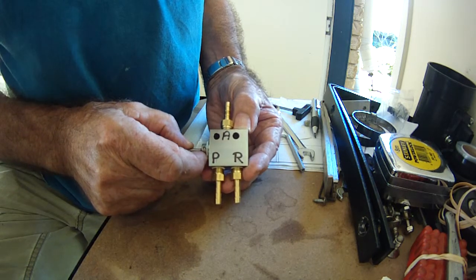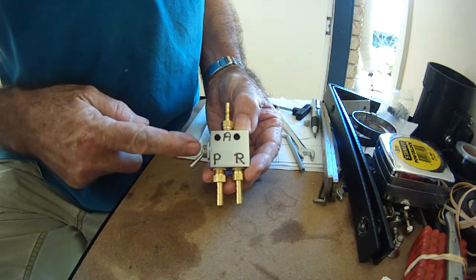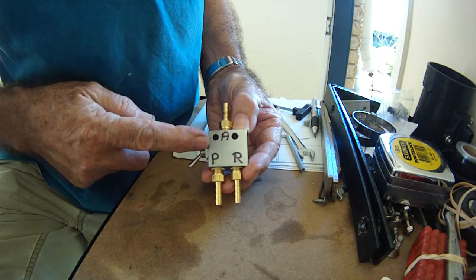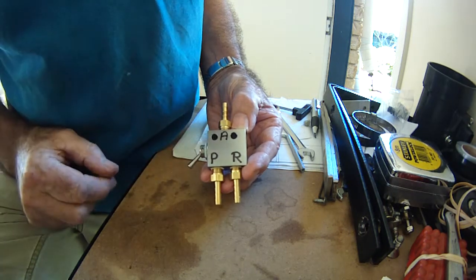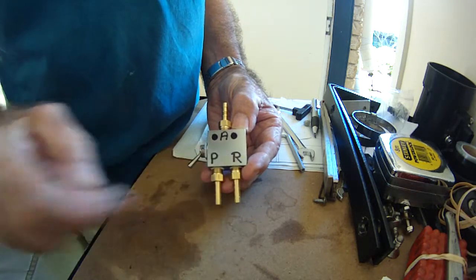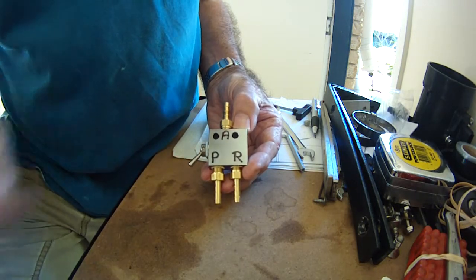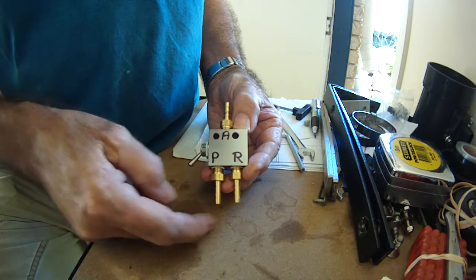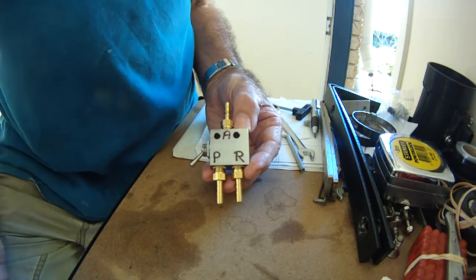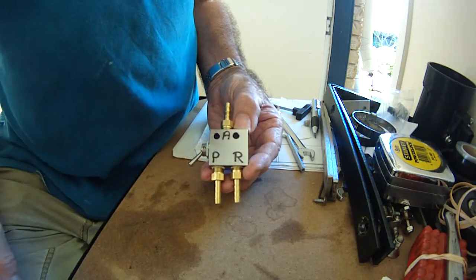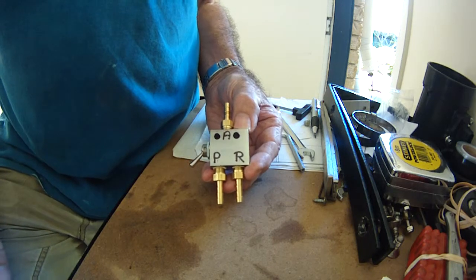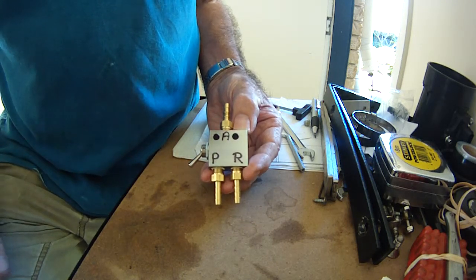When I flick this, the little cam in the back pushes the shuttle valve across and just changes how the ports open up. It then blocks that one and opens up this one. So it really is a non-electric and quite simple way to manage it.